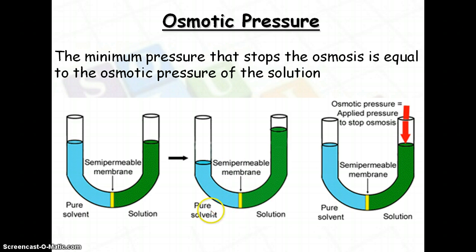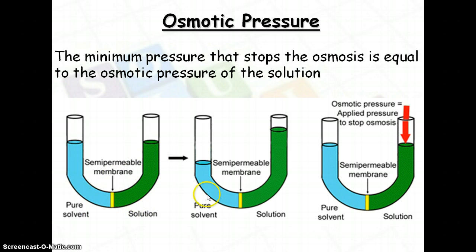Water, or the solvent, can move through the membrane, but the solute particles are too big to move through. You remember from biology that what's going to happen is if you have two solutions — pure solvent and then solvent with solute — water is going to move through to try to equalize the concentrations. You're going to end up with a lot more on one side than the other. The applied pressure required to stop the osmosis process is equal to the osmotic pressure.